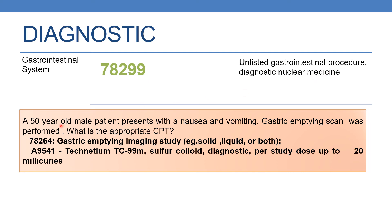Let us discuss an example. A 50-year-old male patient presents with nausea and vomiting and a gastric emptying scan was performed. What is the appropriate CPT? The appropriate CPT is 78264, which is nothing but gastric emptying imaging study — for example, solid, liquid, or both. In this procedure, a radiopharmaceutical agent has been administered, so a HCPCS code should be added in addition: A9541, which is TC99M sulfur colloid, diagnostic per steady dose up to 20 millicuries.